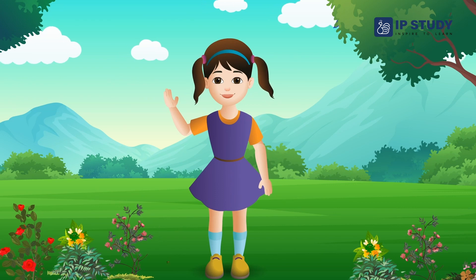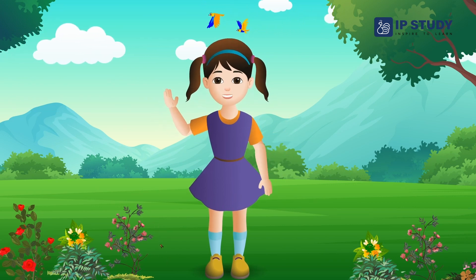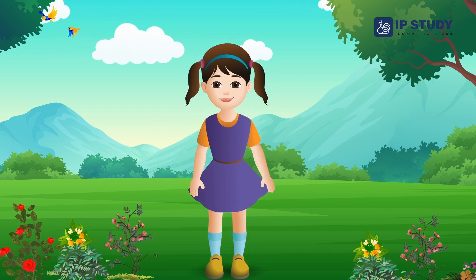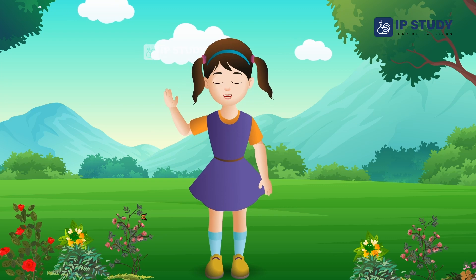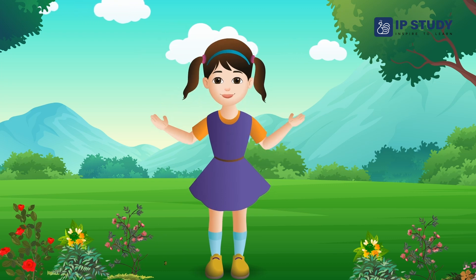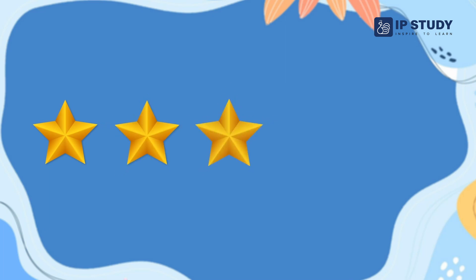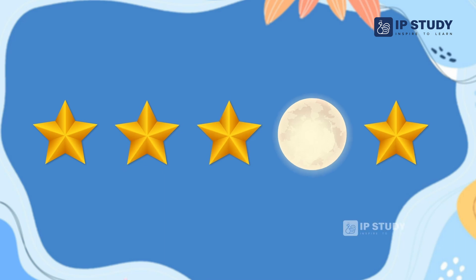Dear students, today we will learn about odd one out. Have you seen a row of objects? You have to circle the one object which is different. Let's look at some examples. There are many objects in a row — this is a star, this is a star, this is a star, this is also a star, but this is a moon.